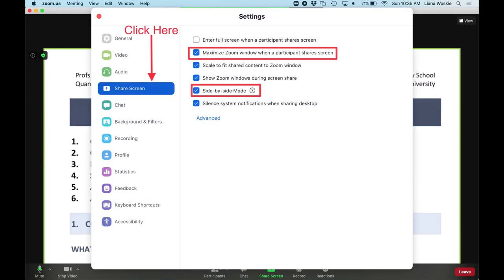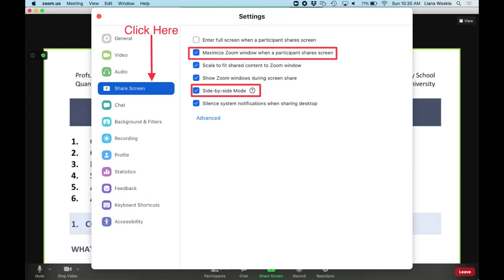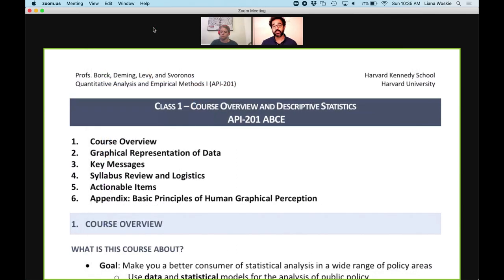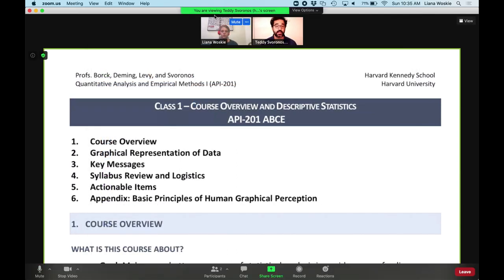You can also make these changes permanently in settings. To make it so that you can still see the faces of your peers and me, I suggest switching to side-by-side mode and using gallery view instead of speaker view, so that you can see several people instead of just one.